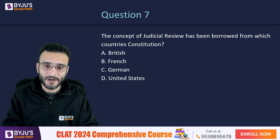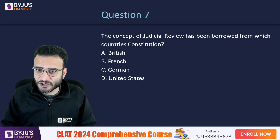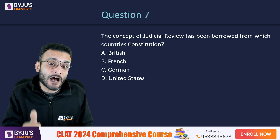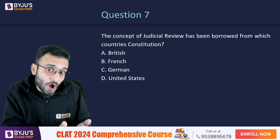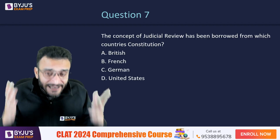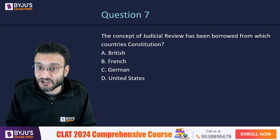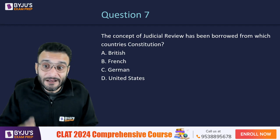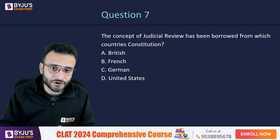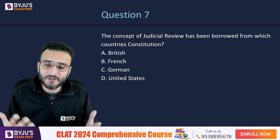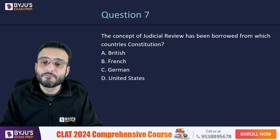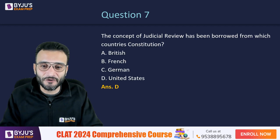Moving on to question number 7: the concept of judicial review. Judicial review is the power of constitutional courts to strike down legislation. If a law passed by Parliament is violative of the basic structure of the Indian Constitution, the High Courts and the Supreme Court have jurisdiction to strike it down. This concept of judicial review came to the Indian context from the United States Constitution — the famous case of Marbury vs. Madison. The correct answer is option D.